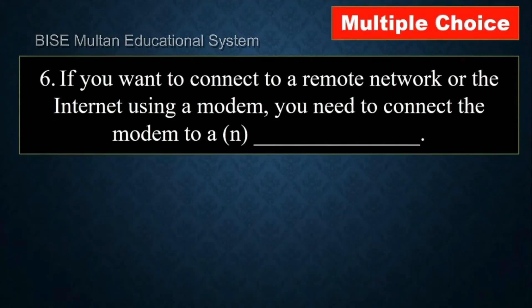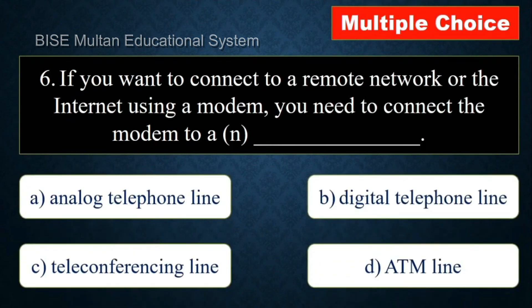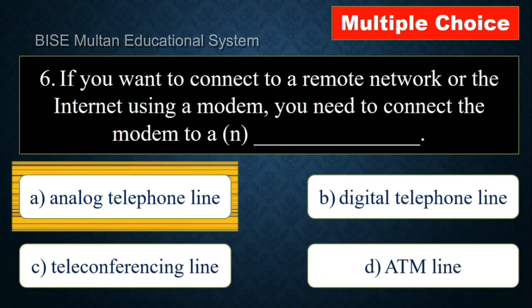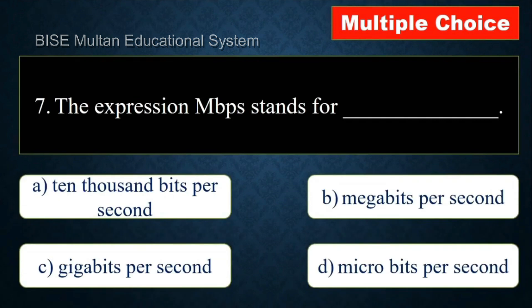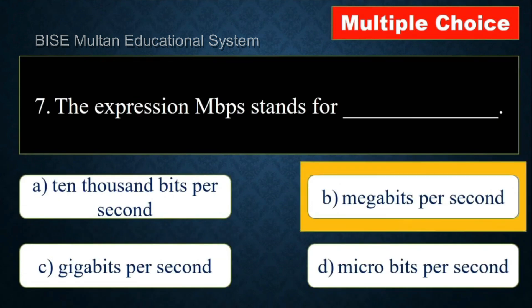Question number 6: If you want to connect to a remote network or internet using a modem, you need to connect the modem to a dash. The answer is analog telephone line. Question number 7: The expression Mbps stands for megabits per second.